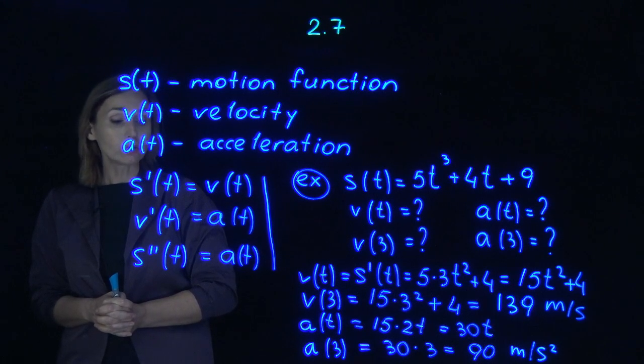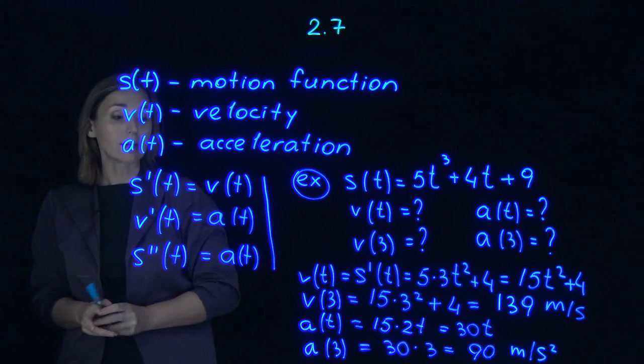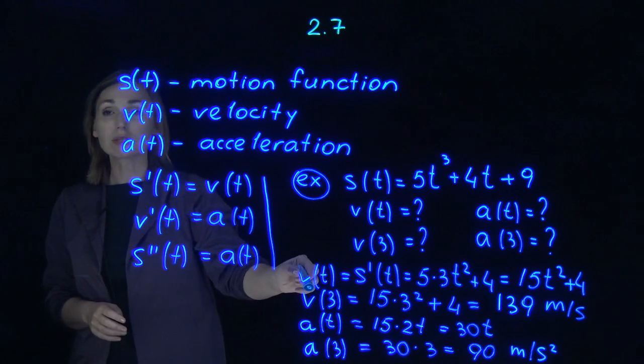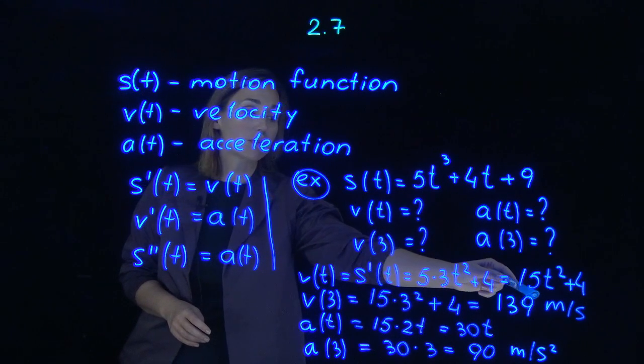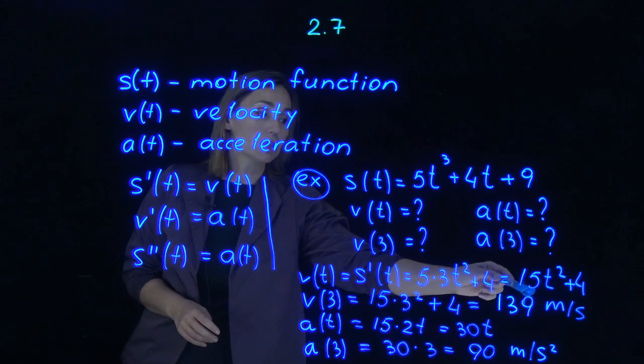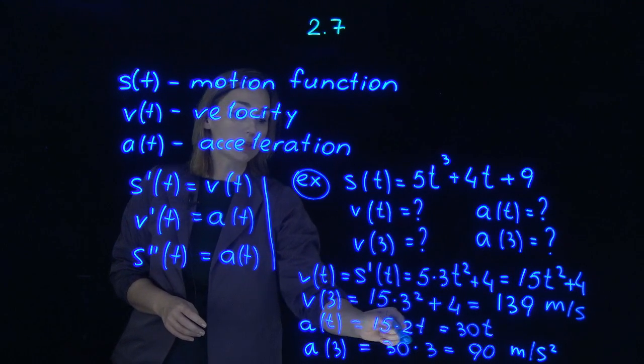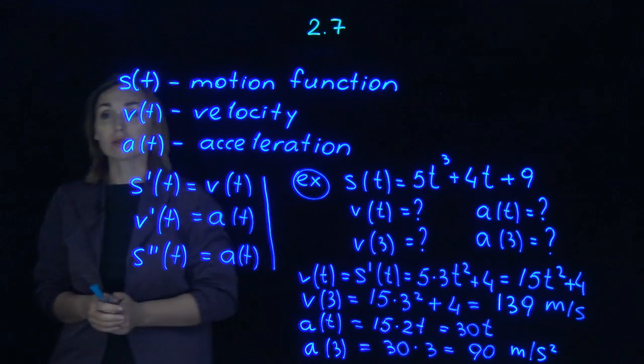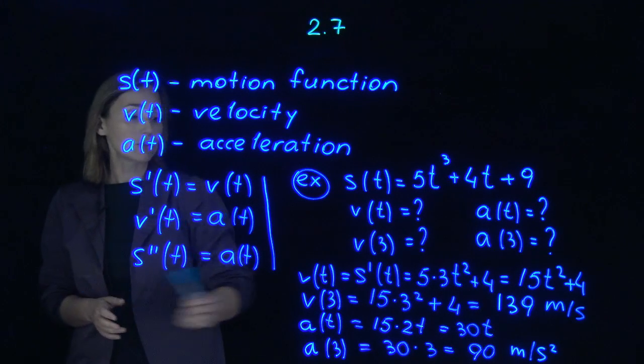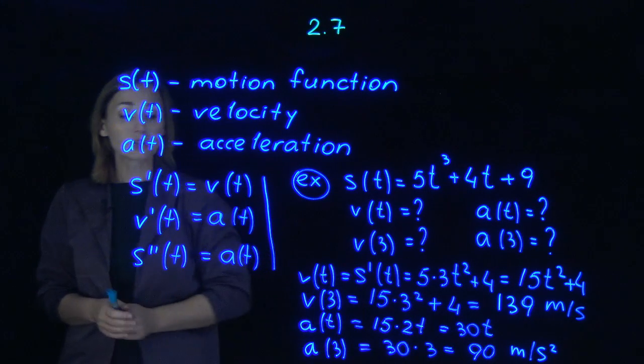After that you need to do acceleration. Acceleration function is derivative of velocity. Velocity is right here. Let's differentiate 15t squared. You will get 15 times 2t. Derivative of constant is 0, so nothing is in here. Multiply coefficients. You will get 30 times time.